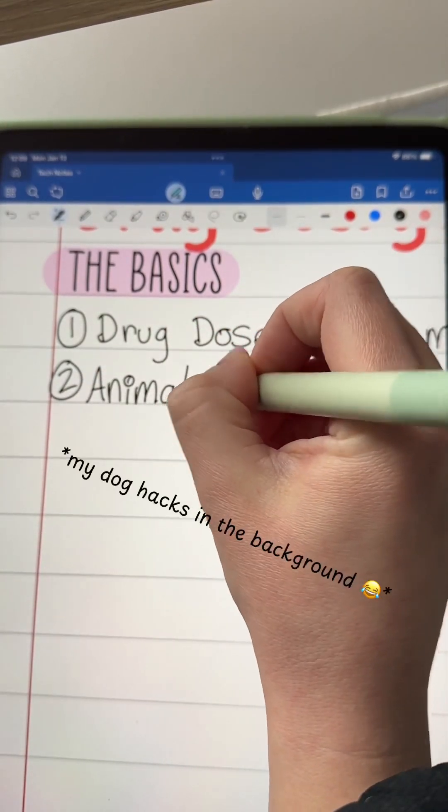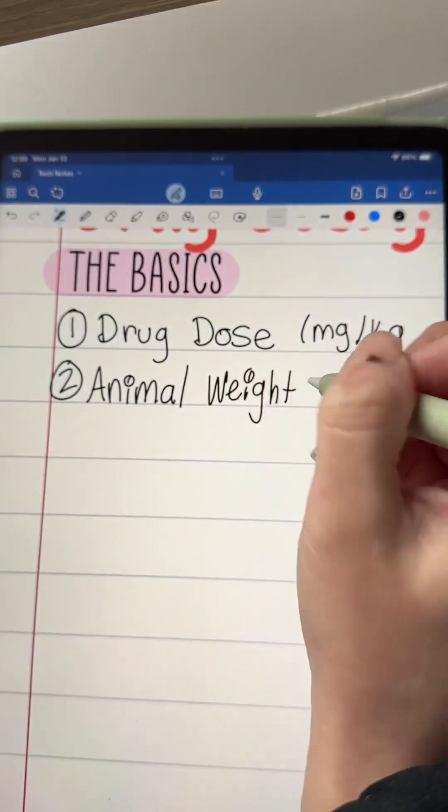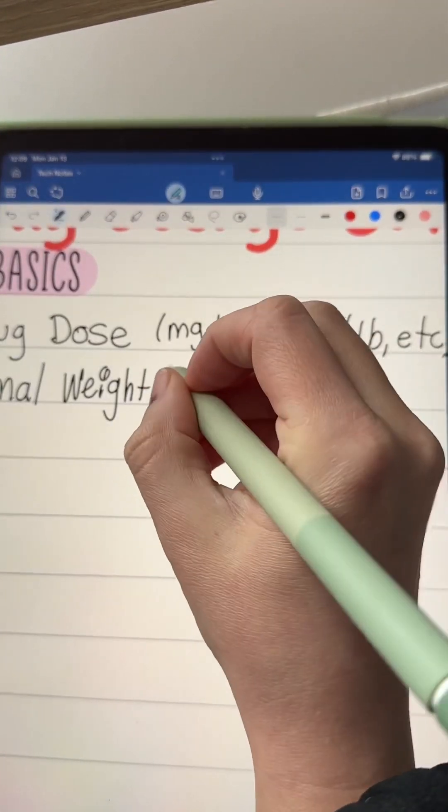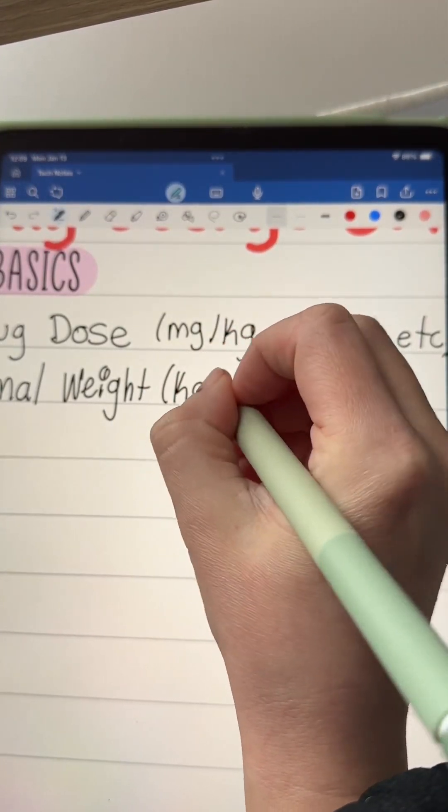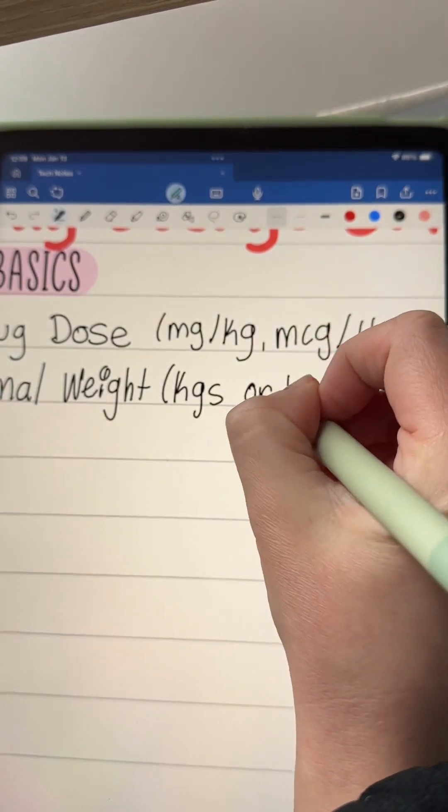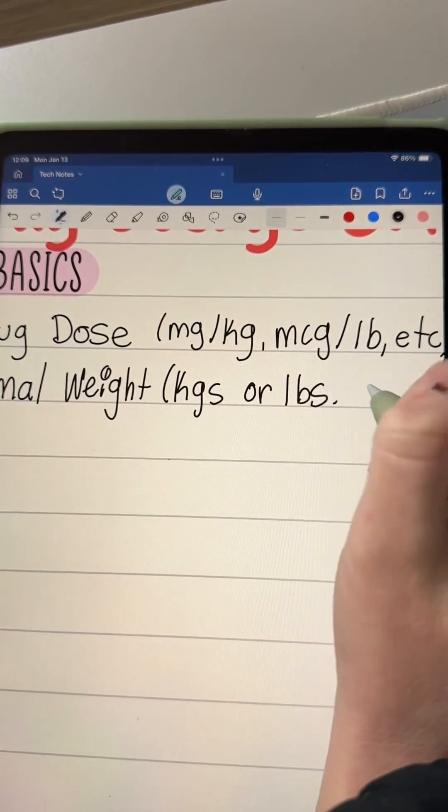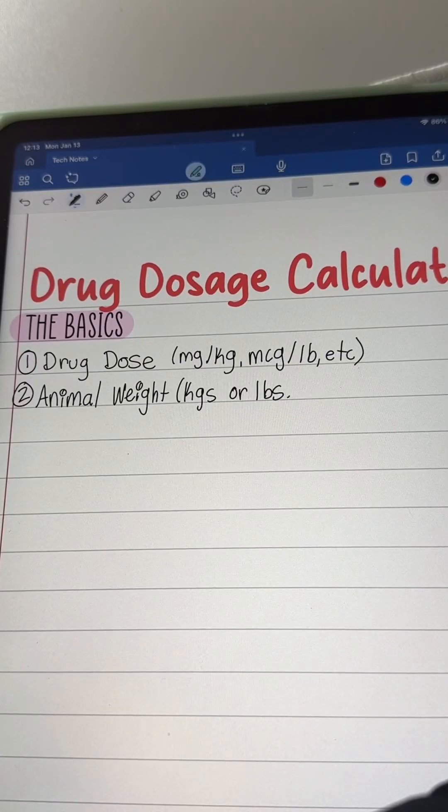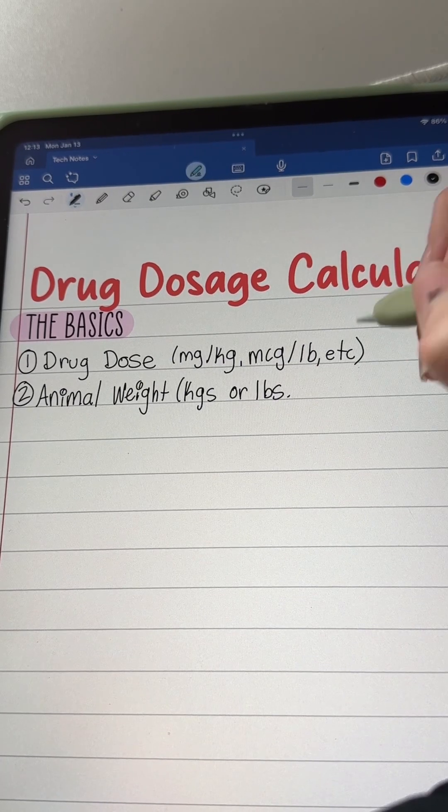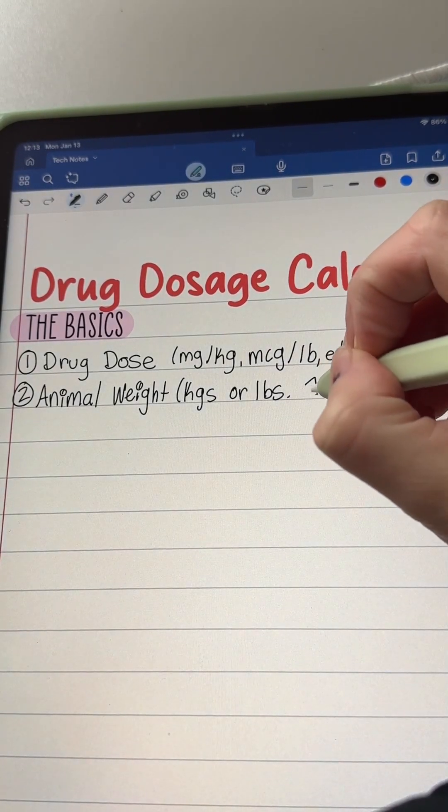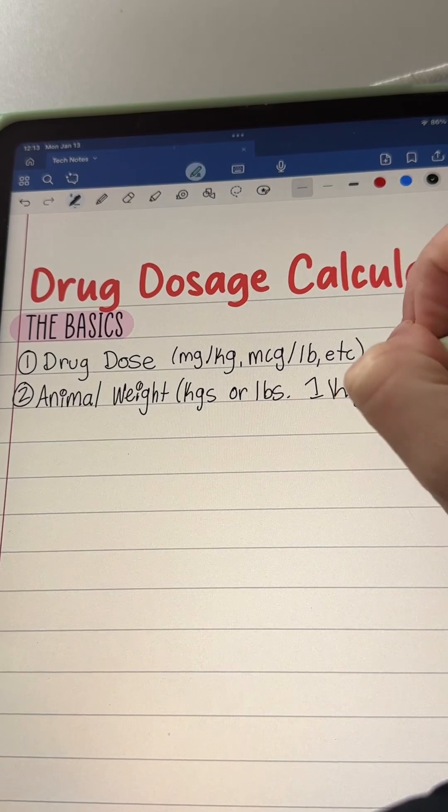Second, we need the animal weight. And this can be taken in kilograms or pounds. And again, you might have to do a conversion with these later, but it's super easy to convert these numbers. So don't fret. Just remember that there are 2.2 pounds per every kilogram. Easy peasy math.